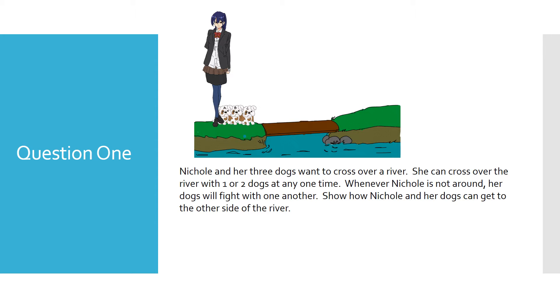Nicole and her three dogs want to cross over a river. She can cross over the river with one or two dogs at any one time. Whenever Nicole is not around, her dogs will fight with one another. Show how Nicole and her dogs can get to the other side of the river.